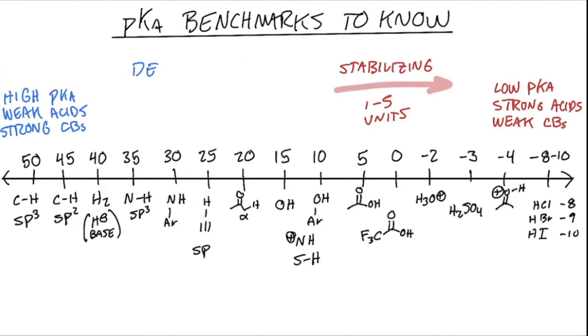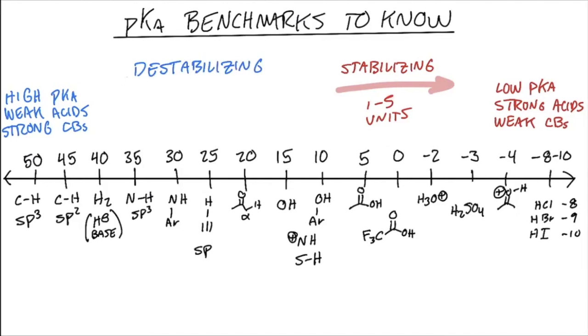The other side of that coin is what if we have destabilizing groups adjacent to our acid, say for example, extra electron donating groups. If that's the case, then we would say, oh, those electron donating groups are adding more electron density to our conjugate base. That's not favorable. It's actually going to take our 15 benchmark value and make it a worse acid. So we would instead want to go up by, you know, somewhere on the order of one to five units.